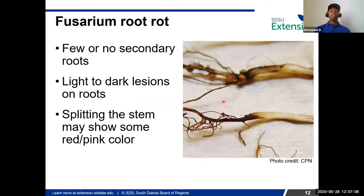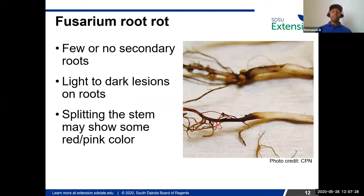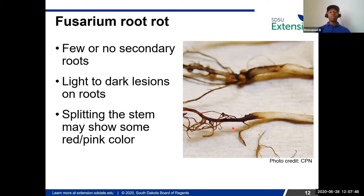Fusarium root rot is common across many crops and is characterized by limited roots on the plant — many secondary roots are lost. Sometimes you pull the plant and only see the main root, which is likely caused by Fusarium. The color is usually dark brown as seen on soybean plants, but if you split the stem you may see a pinkish discoloration, which is an indication of Fusarium root rot.